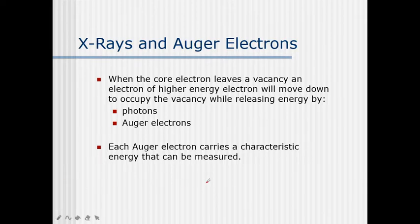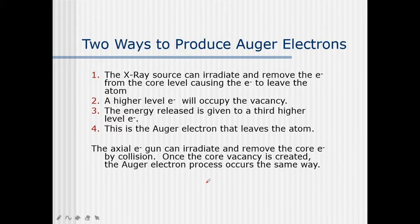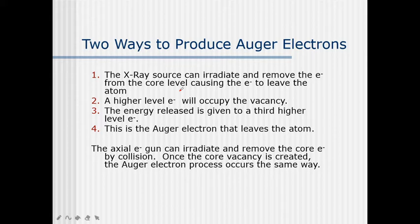So how can we produce auger electrons? An X-ray source can irradiate and remove electrons from the core level, causing the electron to leave the atom — this is what we also do in XPS. A higher level electron will occupy the vacancy once it is created, and the energy released is given to a third, higher-level electron. This is the auger electron that leaves the atom. An electron gun can also remove core electrons by collision; once the core vacancy is created, the auger electron process occurs the same way.